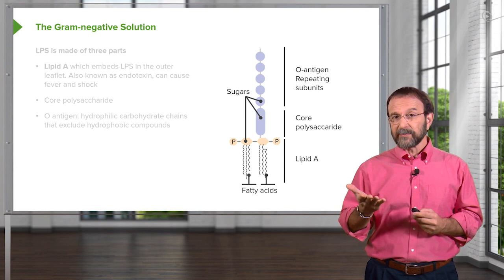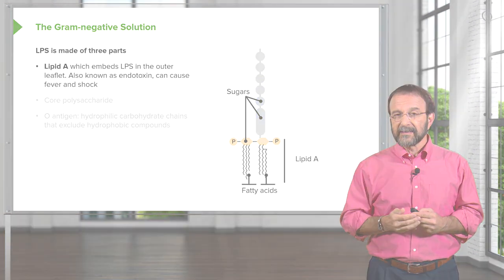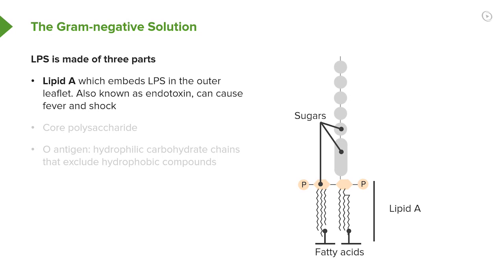Lipopolysaccharide has three parts. The first part is lipid A, and that allows the whole molecule to embed itself into the outer leaflet of the membrane. Lipid A is also known as endotoxin, and this compound on its own can cause fever and shock. So when you have a bacterial infection and you're getting fever or shock, it could be caused by lipid A.